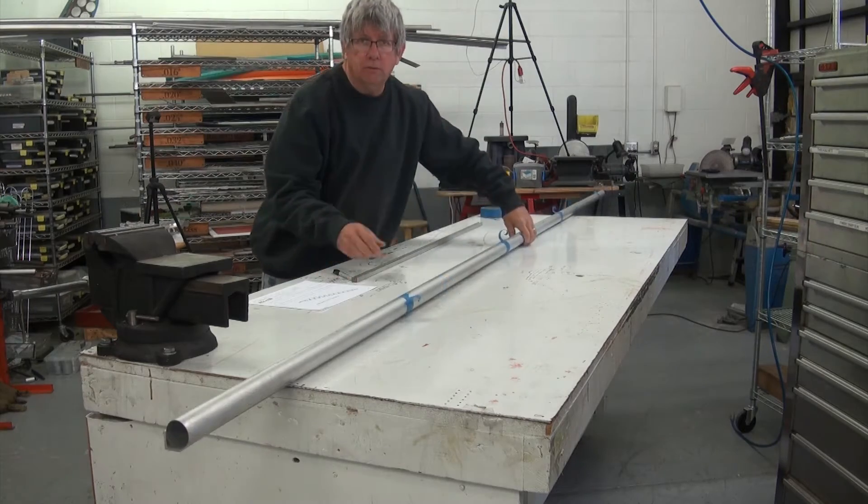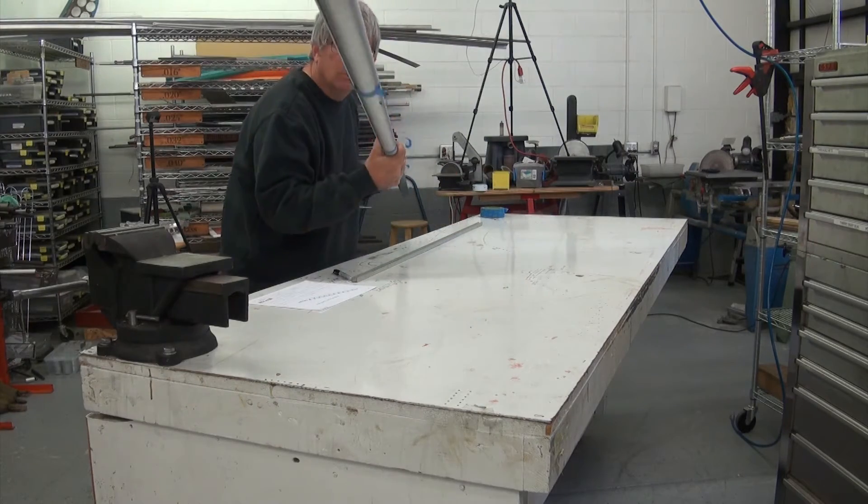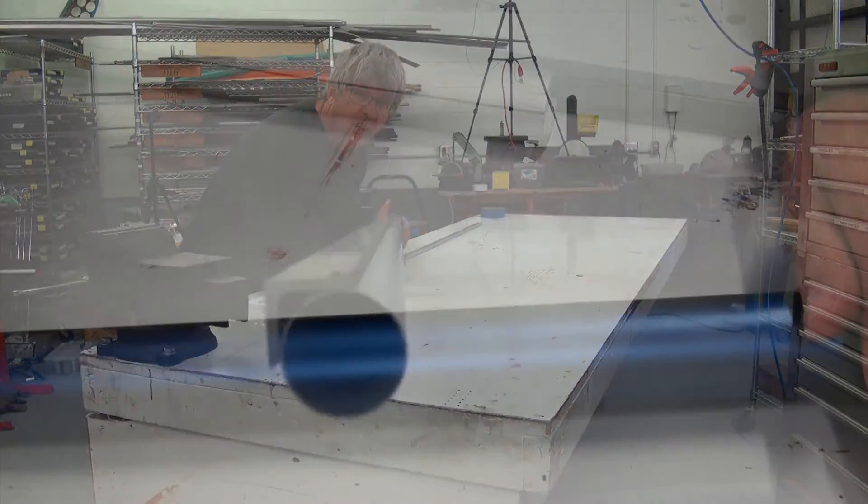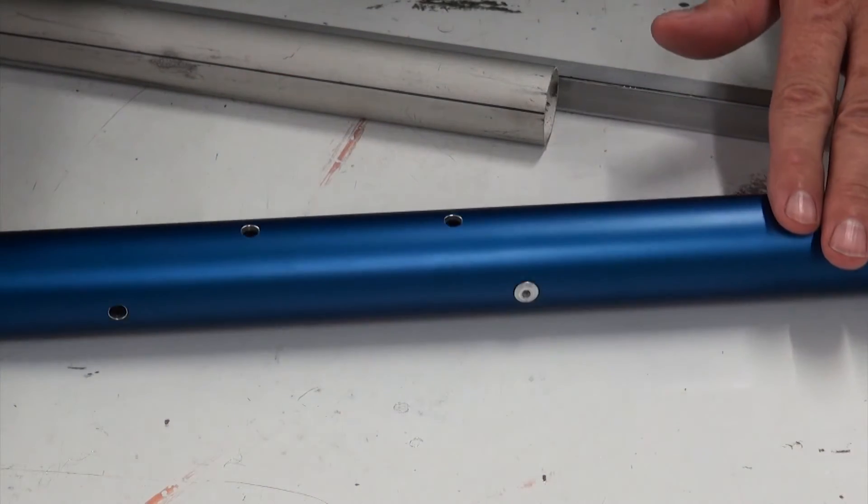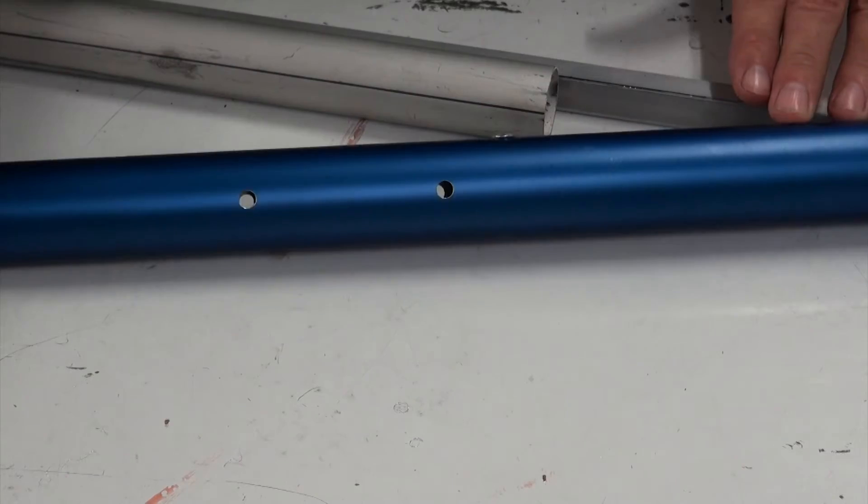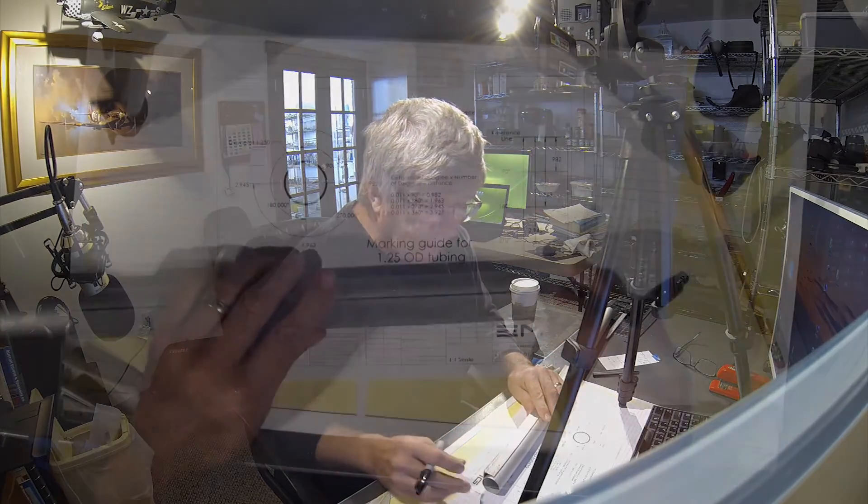Many of the tubes on the EMG6 require holes to be drilled at the reference line at 90, 180, and 270 degree positions in relationship to the reference mark. All right, so step two in this whole process is we're going to talk about how we project a line other than the original reference line that we had.